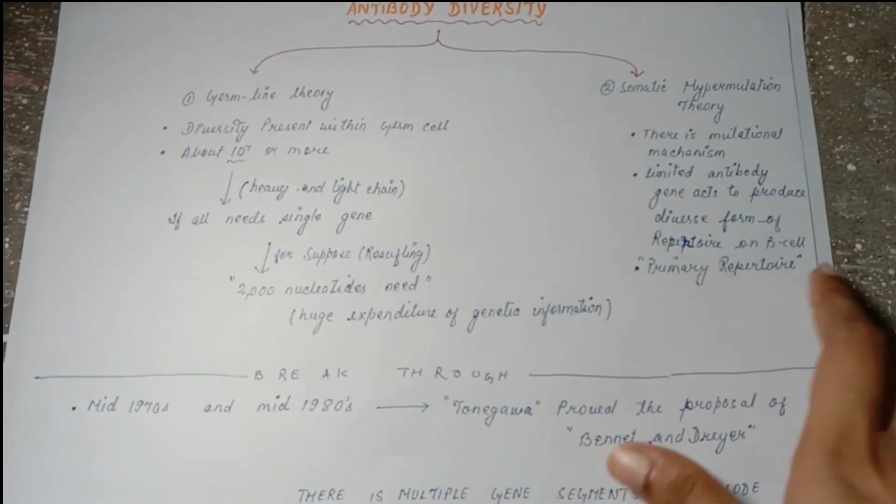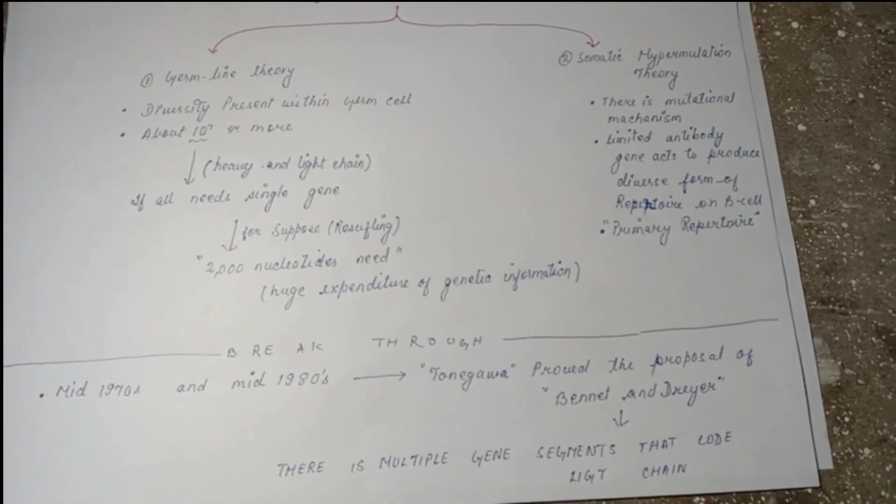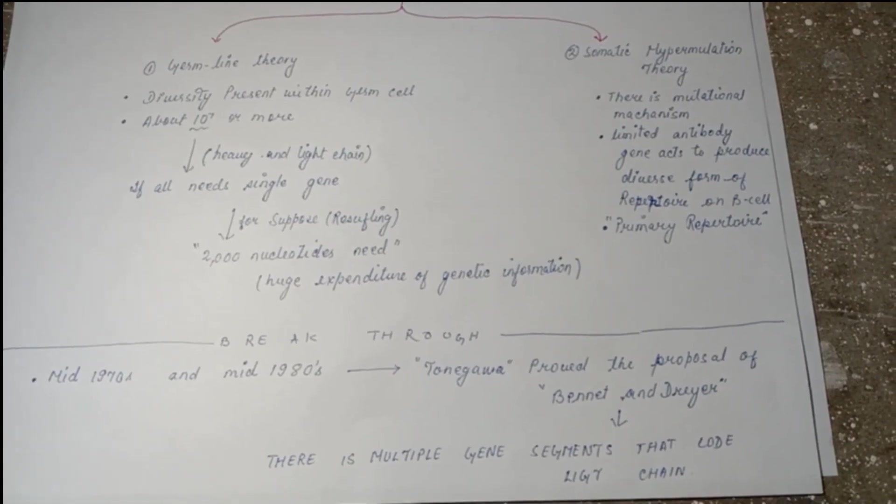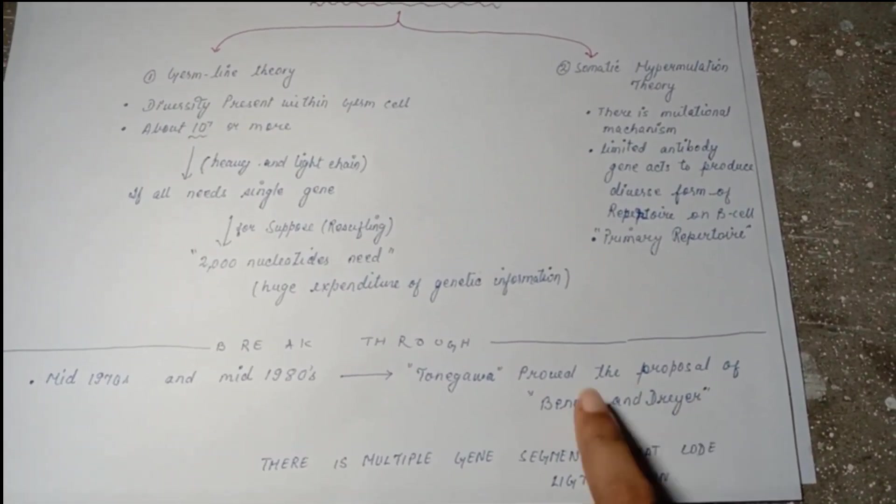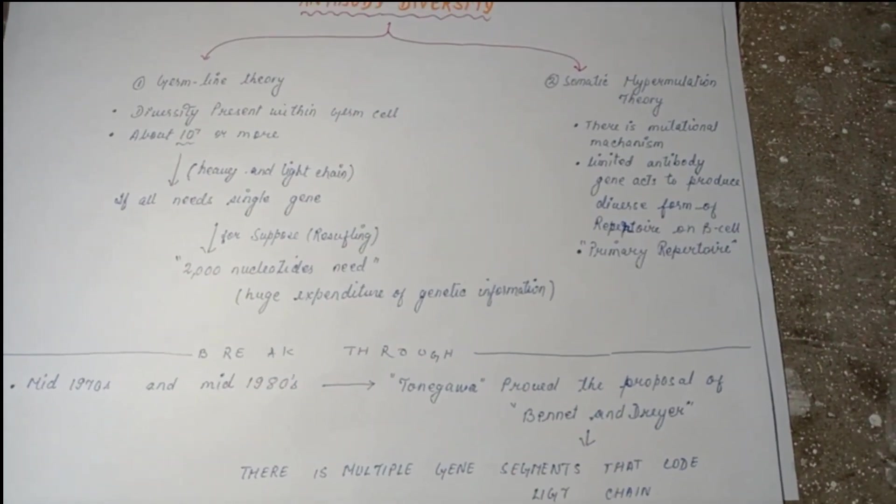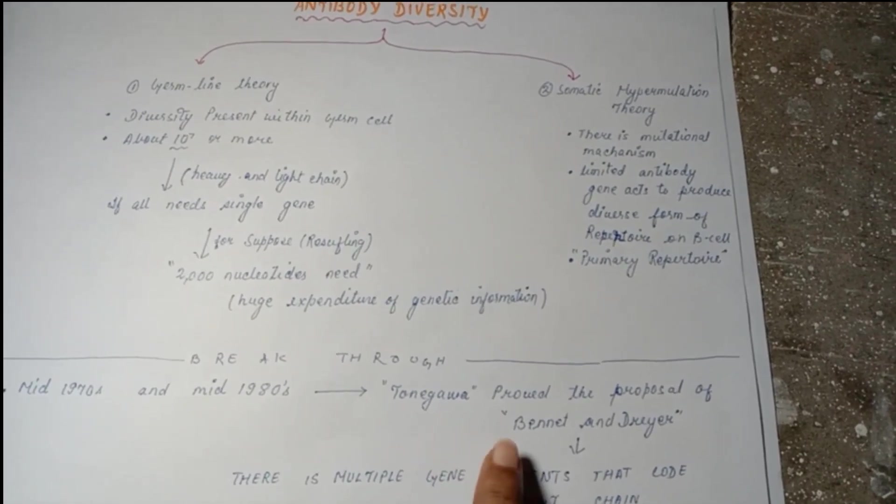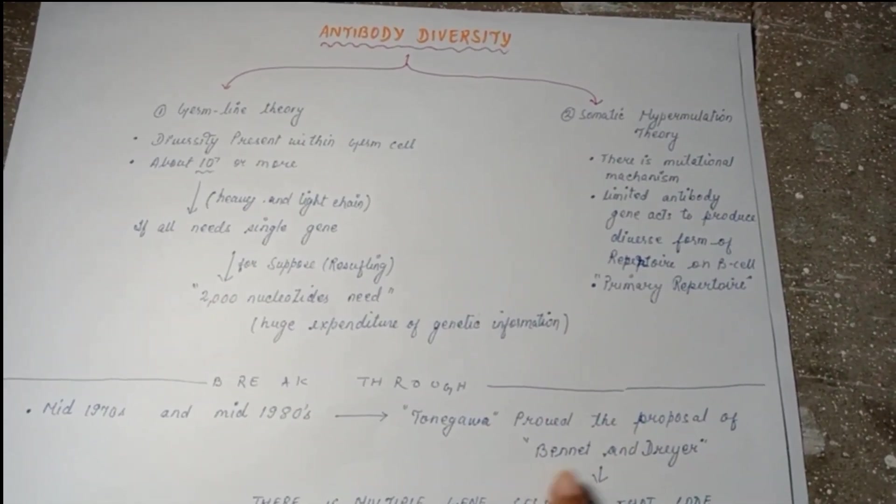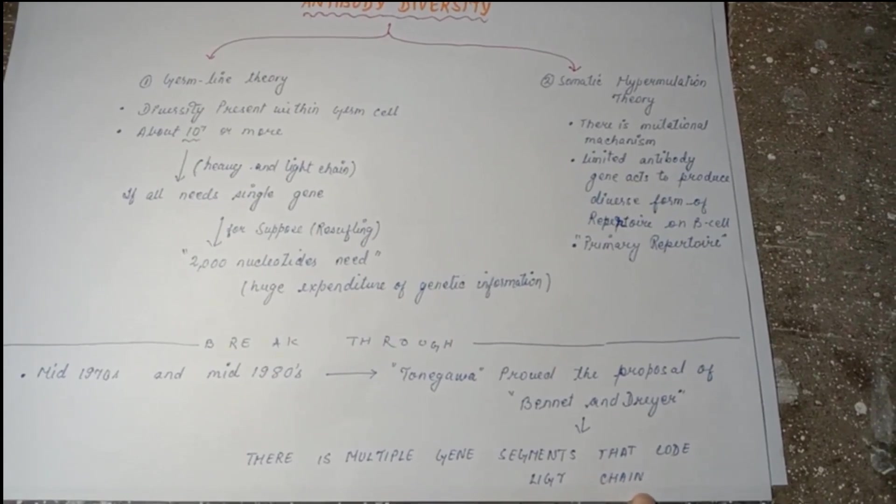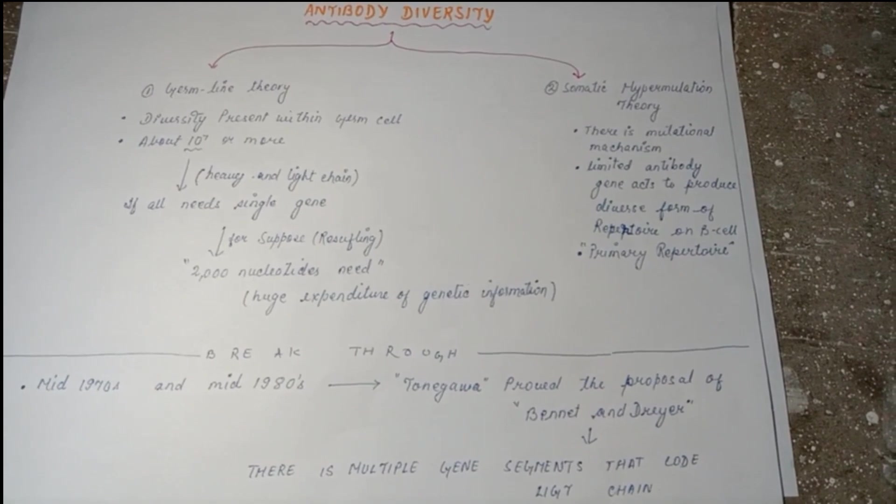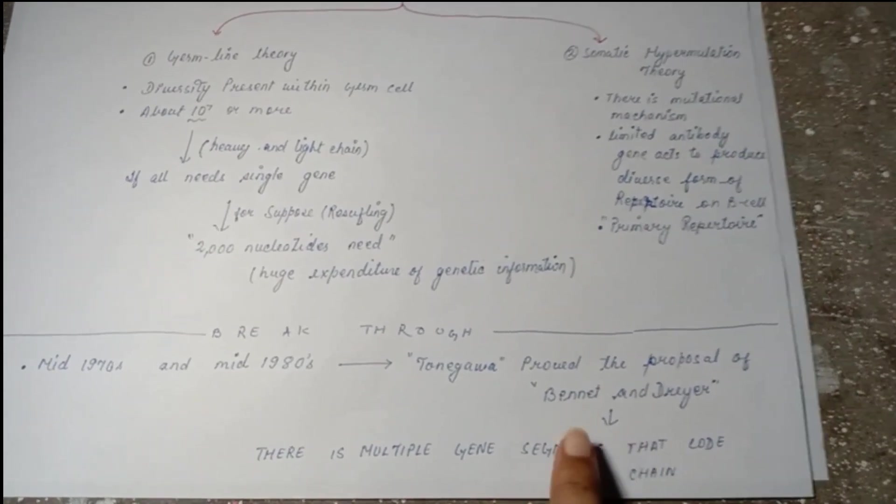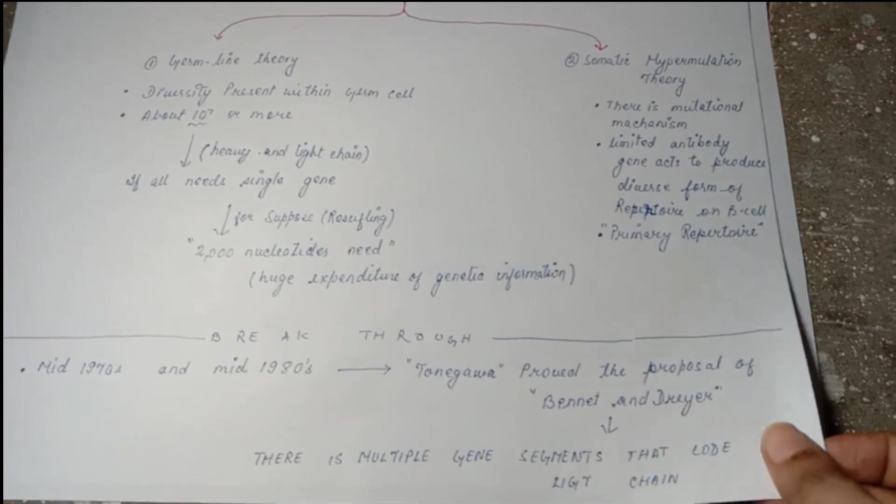A major breakthrough occurred in 1970s and 1980s. There were two scientists, Bonnet and Drear, in the 1970s. They proposed some theory which was not proved then. Only hypermutation and germline theory simultaneously occurred. Then there was a scientist Tonegawa. Tonegawa was a scientist who proved this theory of Bonnet and Drear. The theory was there are multiple gene segments that code the light chain. It's not that single gene is responsible for antibody. Here there are multiple gene segments coding for the light chain.